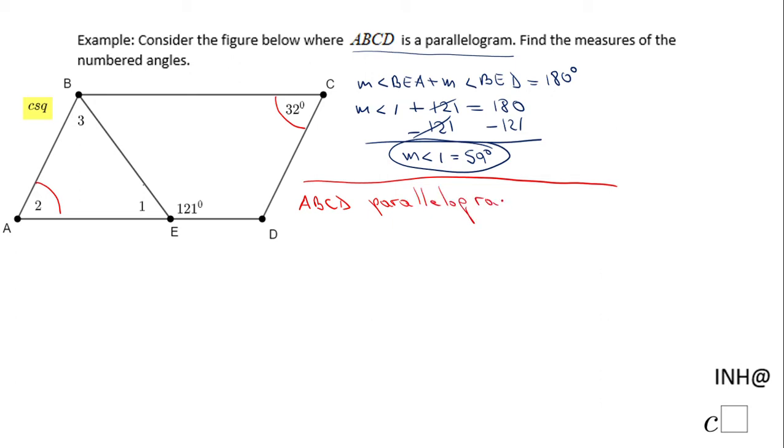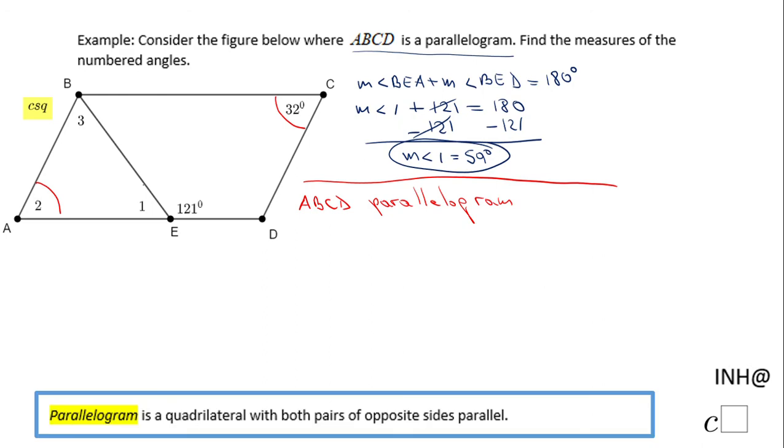And the definition of a parallelogram is down here, and one of the properties is that opposite angles are congruent. So the measure of angle A equals the measure of angle C, which is 32 degrees. So basically the measure of angle two is 32 degrees. I think it's very simple to find angle two.